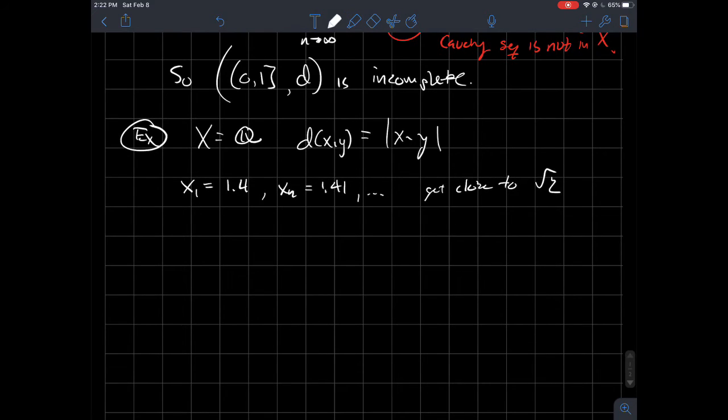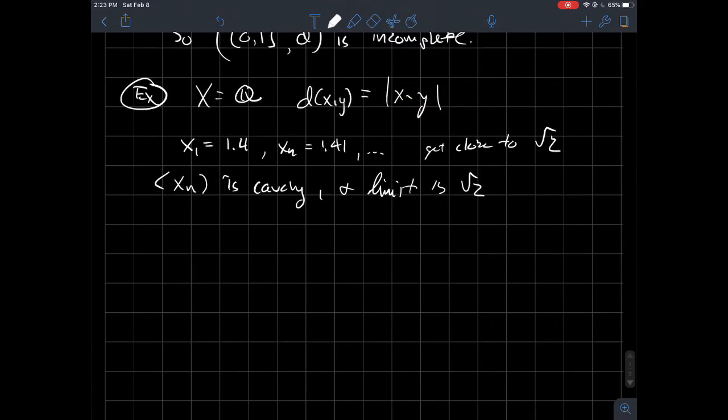So what's my point here? Well, these points in my sequence—if I put them all together in a list—that forms a Cauchy sequence, and I tried to cook this thing up so that the limit is the square root of two. But again, square root of two is not an element of the set where I live at. And so Q, the rational numbers, are not a complete metric space. So (Q, d) is also incomplete.